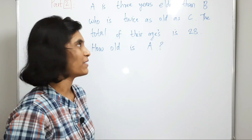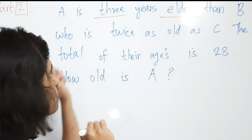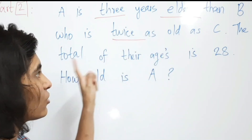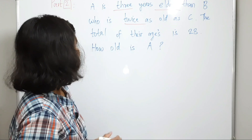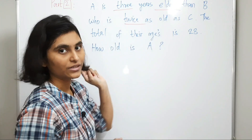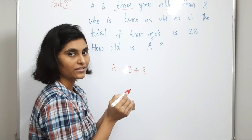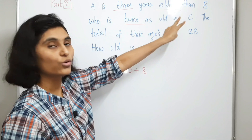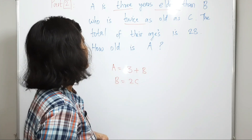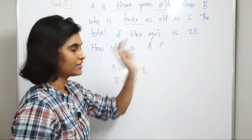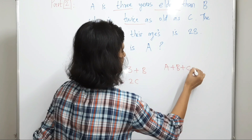Now let's solve a simple problem just for practice. A is 3 years elder than B, who is twice as old as C. The total of their ages is 28. How old is A? Let's frame this into equation form: A = 3 + B, B = 2C, and A + B + C = 28.